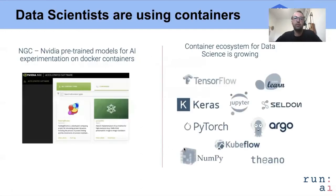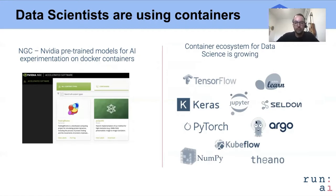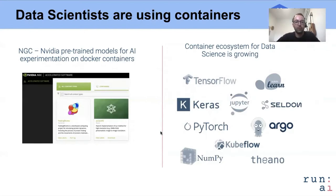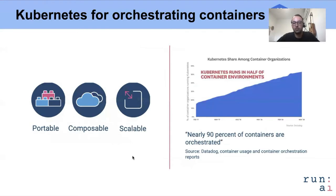Data scientists are widely adopting containers today. This is due to the fact that a lot of the very popular tools used by data scientists are built and designed for containers. There's also the NVIDIA NGC library, which provides a lot of pre-trained models and containers that researchers can use to get started very fast. All of these things were built for containers, and that's why data scientists want to use them. The de facto new standard for orchestrating containers is Kubernetes.